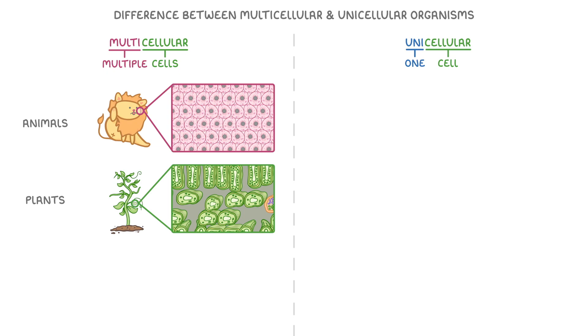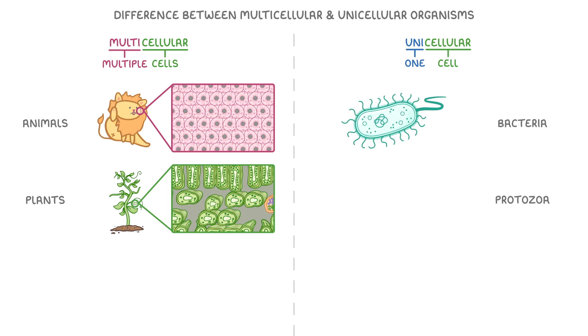Some examples of unicellular organisms are bacteria and protozoa, like euglena and amoeba. Each of these organisms is only a single cell. If you had two cells, you'd have two organisms.